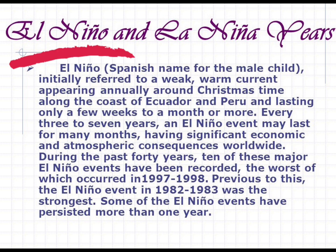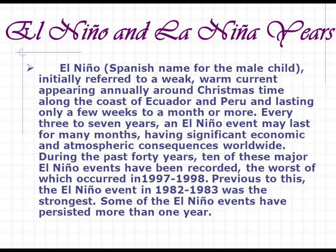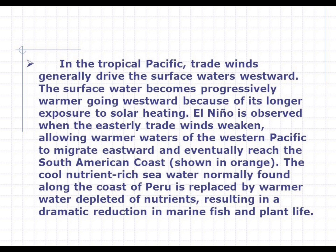El Niño and La Niña years: El Niño initially referred to a weak warm current appearing annually around Christmas along the coast of Ecuador and Peru, lasting only a few weeks to a month. Every three to seven years, an El Niño event may last many months, having significant economic and atmospheric consequences worldwide. During the past 40 years, 10 major El Niño events have been recorded; the worst occurred in 1997–1998, with the previous strongest event in 1982–1983. In the tropical Pacific, trade winds generally drive surface waters westward, becoming progressively warmer due to longer solar heating exposure. El Niño is observed when easterly trade winds weaken, allowing warmer western Pacific waters to migrate eastward to the South American coast, replacing cool nutrient-rich water with warmer water depleted of nutrients, resulting in dramatic reductions in marine life.